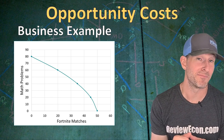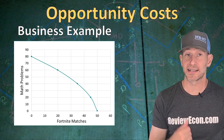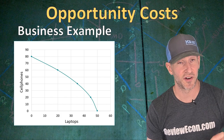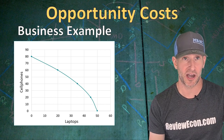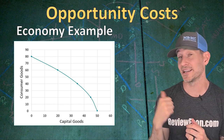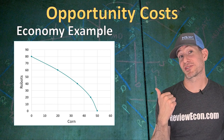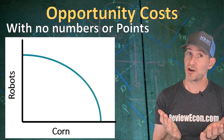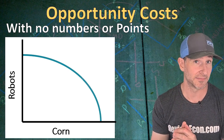In economics, we mostly focus on business choices. Although you can understand this with Fortnite and math problems, let's turn this into a business example and look at laptops versus cell phone production. An electronics manufacturer may look at the Opportunity Cost and the Production Possibilities Curve for cell phones or laptops. We can also look at the entire economy by taking categories of goods — such as capital goods and consumer goods. You'll do that a lot in macroeconomics. You can also have a fictitious economy that produces just two things, like corn and robots. We can simplify by removing all the numbers, which is common in economics when we don't know exact figures, and still illustrate the key point.